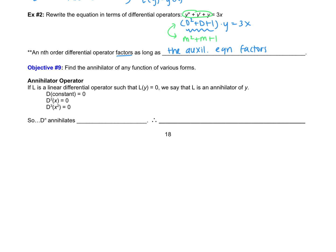The annihilator operator: if L is a linear differential operator such that when we apply it to y we get 0, we say L is the annihilator of y. For example, taking the derivative of a constant gives 0, so D is the annihilator of a constant. D² applied to x gives 0, so D² is the annihilator of x. In general, D^n annihilates c, x, x², up through x^(n−1) — so to annihilate a polynomial of degree n−1, we use D^n.